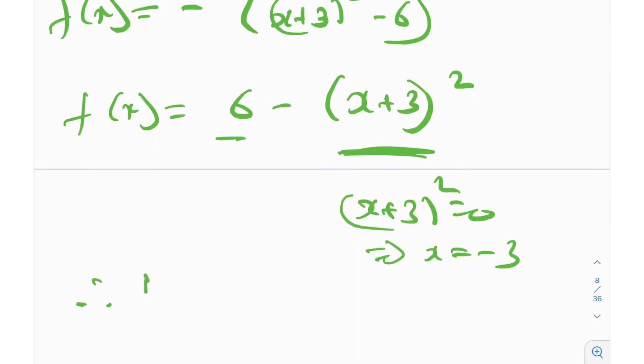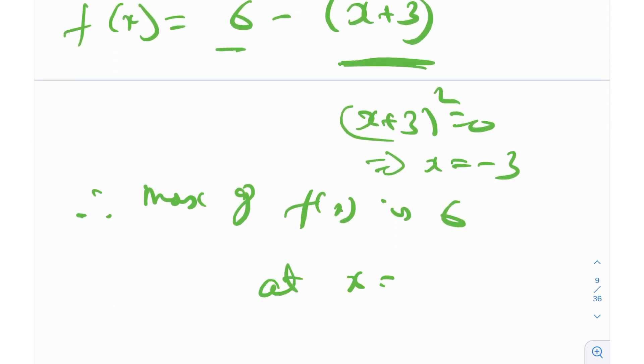The value is obviously going to be less than 6 until and unless this thing is 0, which implies that x equals to -3. Therefore, maxima of f(x) is 6 at x = -3.